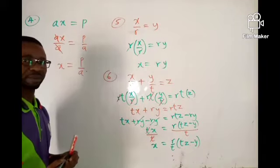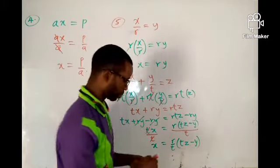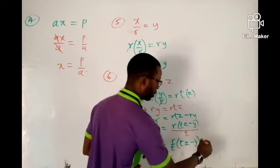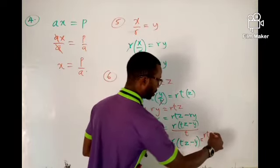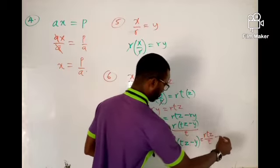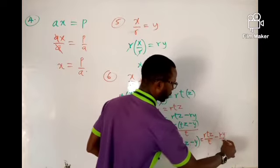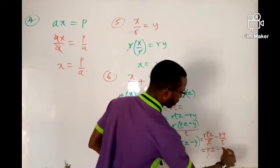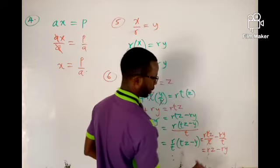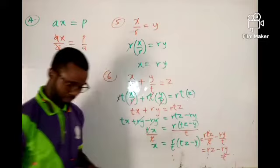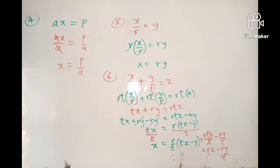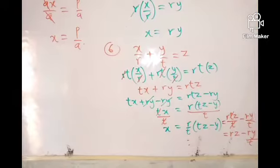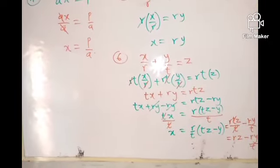You can also open the brackets if you want to simplify further. That gives rtz over t minus ry over t, so this t cancels this t, and the final answer is x equals rz minus ry over t. Take your time to look at all we have done and try to master it — you may need to pause the video and go over it.